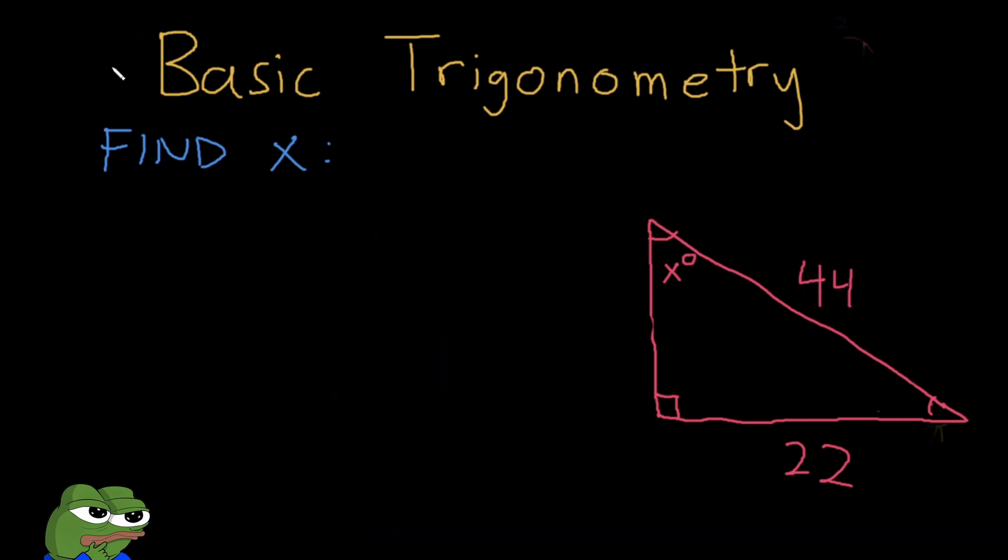Now it's interesting because we can actually do another process where we find the angle given two sides. For example, here we have an unknown angle x degrees, and we have two sides: 22 as its opposite, and then as its hypotenuse we have 44. So we can use sine here. It's sine of x degrees equals the opposite side, that's 22, over the hypotenuse.